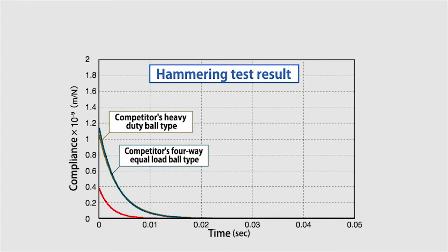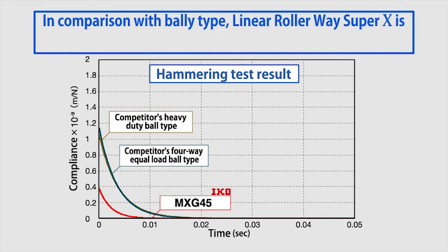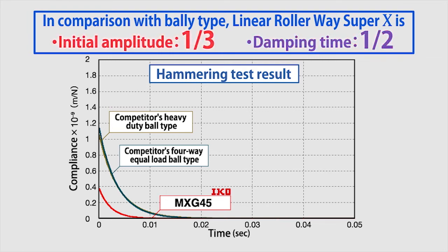This graph shows data from a comparison of the hammering test results with the ball type of the same size manufactured by another company. Compared to the ball type of the other company, we can see that the initial amplitude is approximately one-third and the attenuation time approximately one-half those of the product.